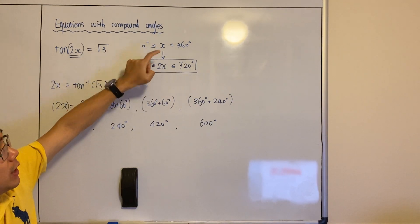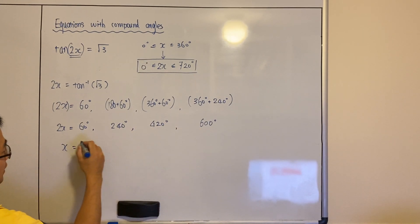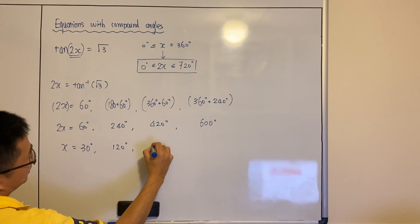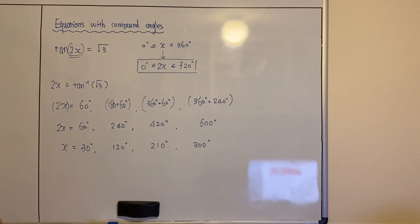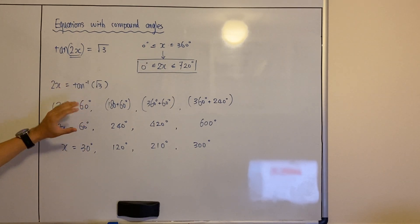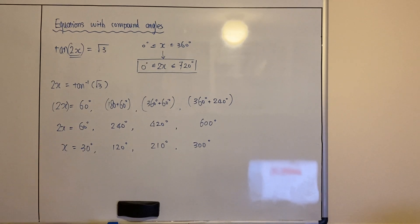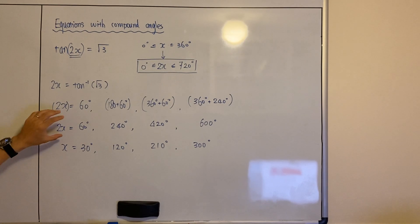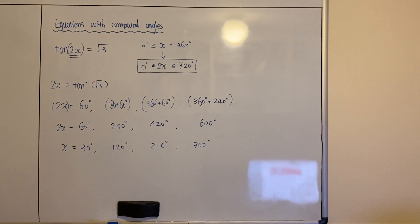Remember, we are solving for x, not 2x. So you've got one more step — divide every single angle by 2. That gives 30, 120, 210, and 300 degrees. Those are all the answers. Make sure you do not divide by 2 when you first work out the first angle. Continue to work out every single angle before you divide everything by the number in front of x. You only do that after finding all the angles.